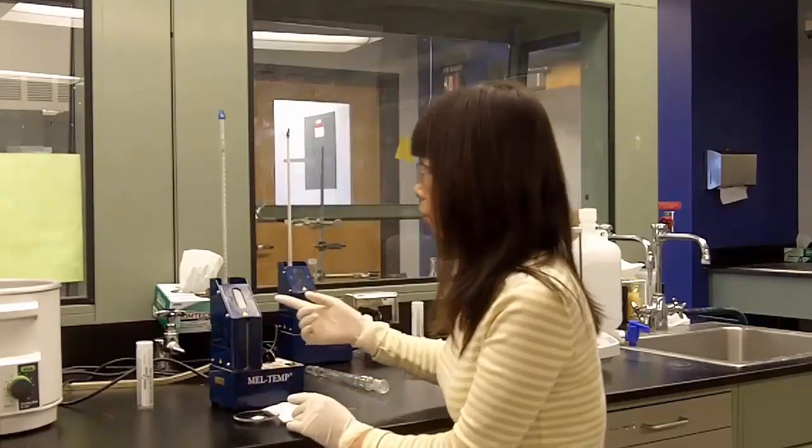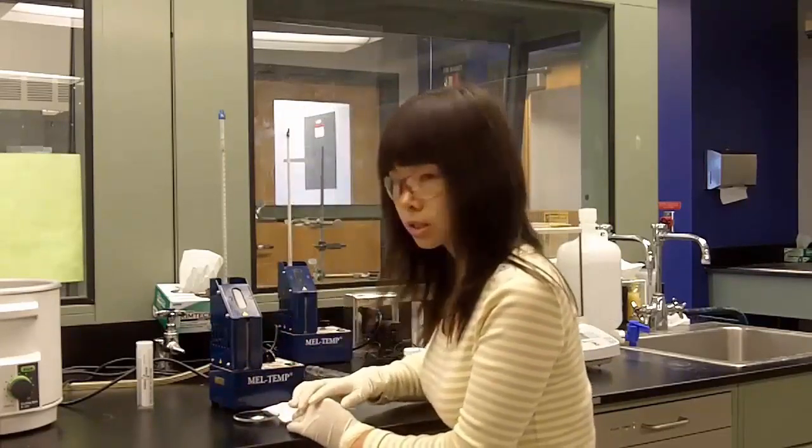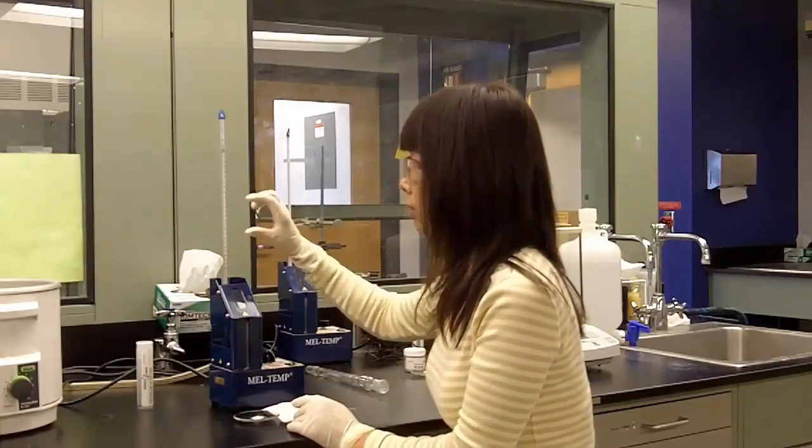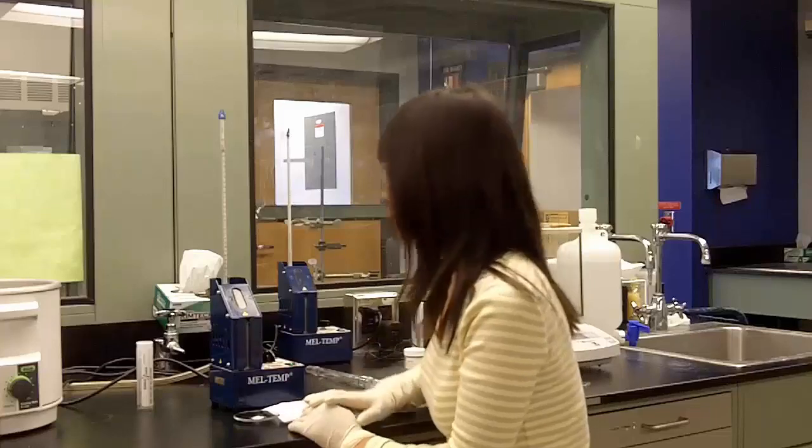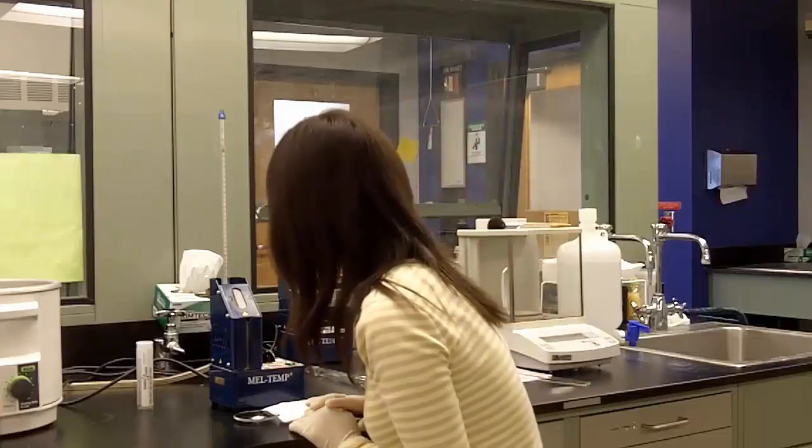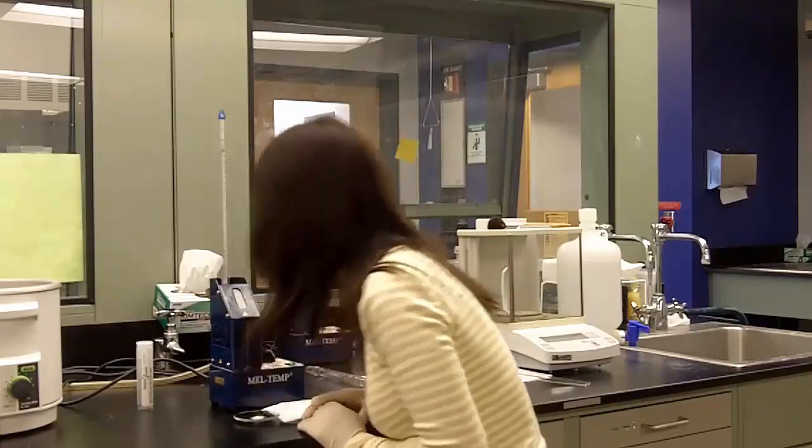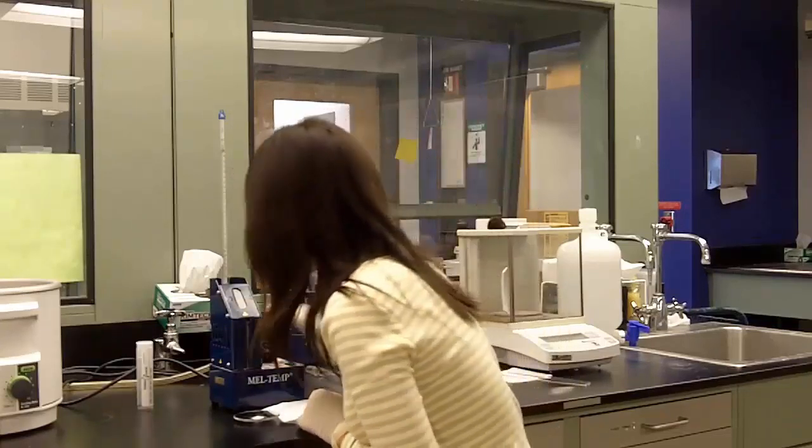Since this is an unknown sample, we don't know if it's going to melt at 60 degrees or 200 degrees. So a rough melting point is necessary to help you narrow down the melting range. And the temperature is rising very fast. And now it's about 60 degrees and the sample is still solid, so we're going to keep watching.